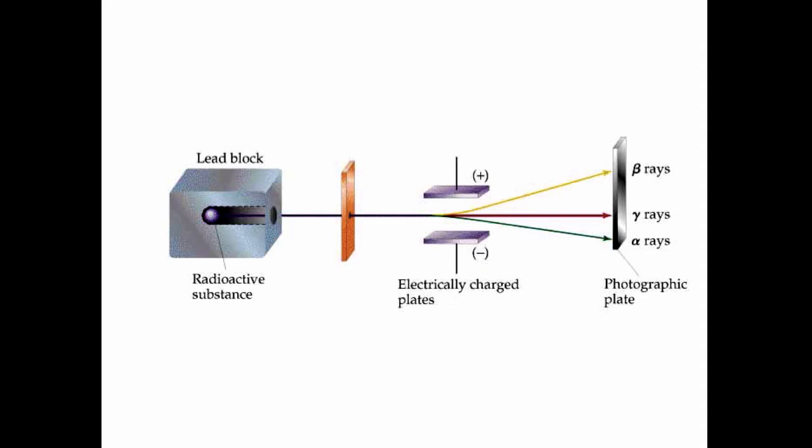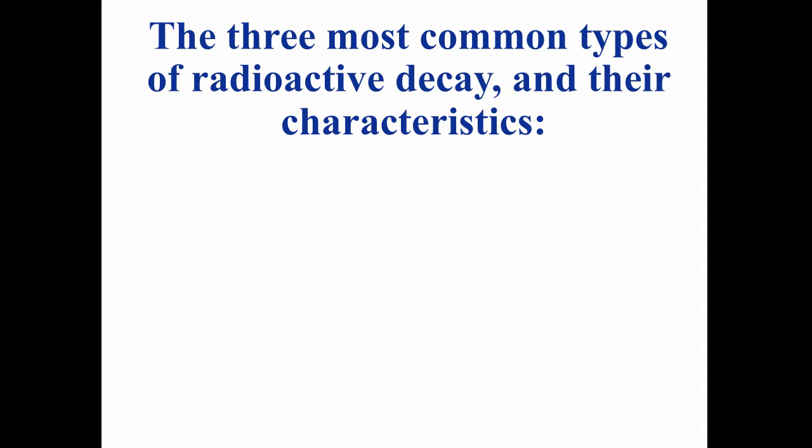These three types of radiation he called alpha, beta, and gamma radiation. He didn't know what they were initially, but he just gave them essentially Greek letters A, B, and C. We now know what these types of radiation are. They're the three most common types of radioactive decay.